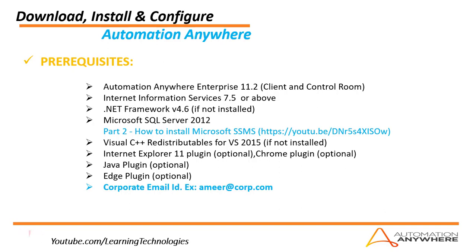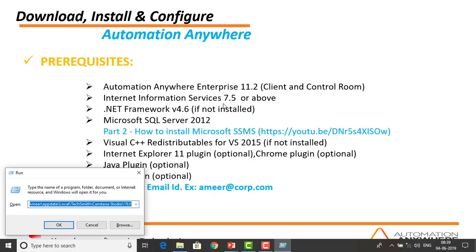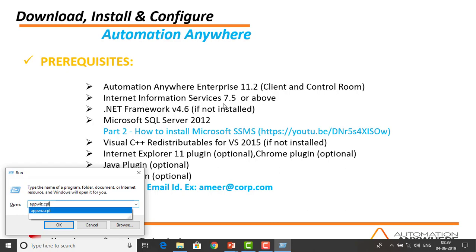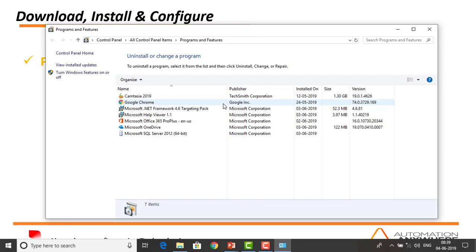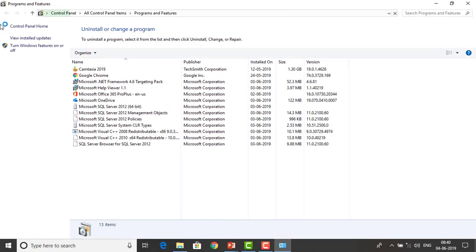Now, the first step is to install IIS services 7.5 on our local system. Let me go to Run and give the command appwiz.cpl. It will take a little bit of time to open. Please be patient for a while.